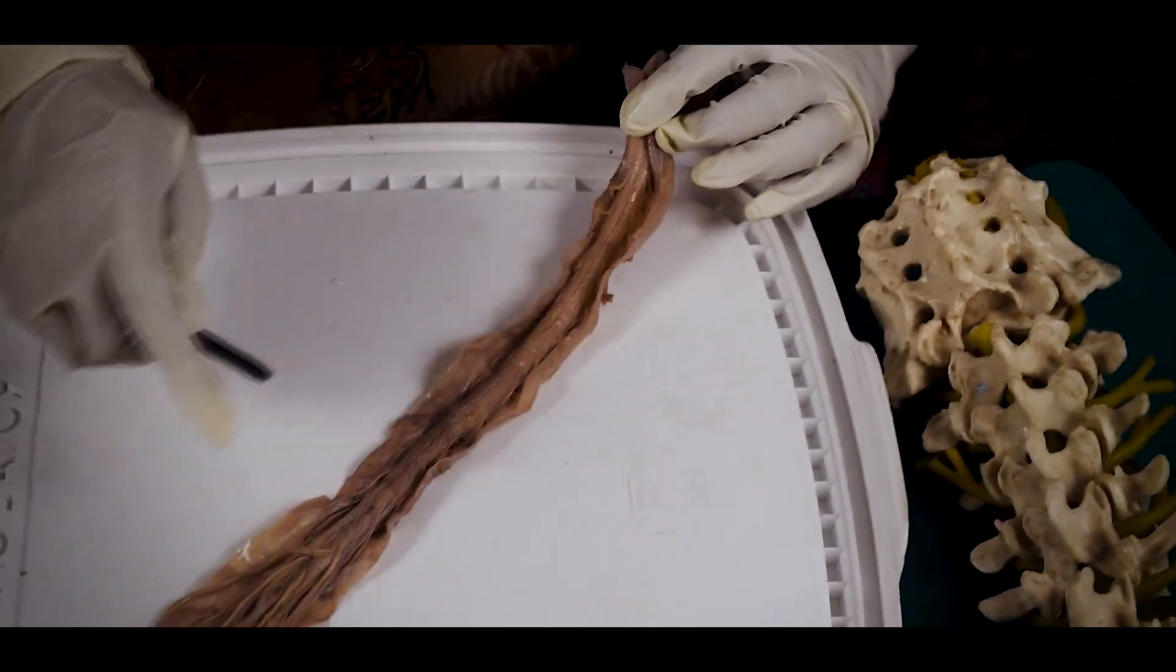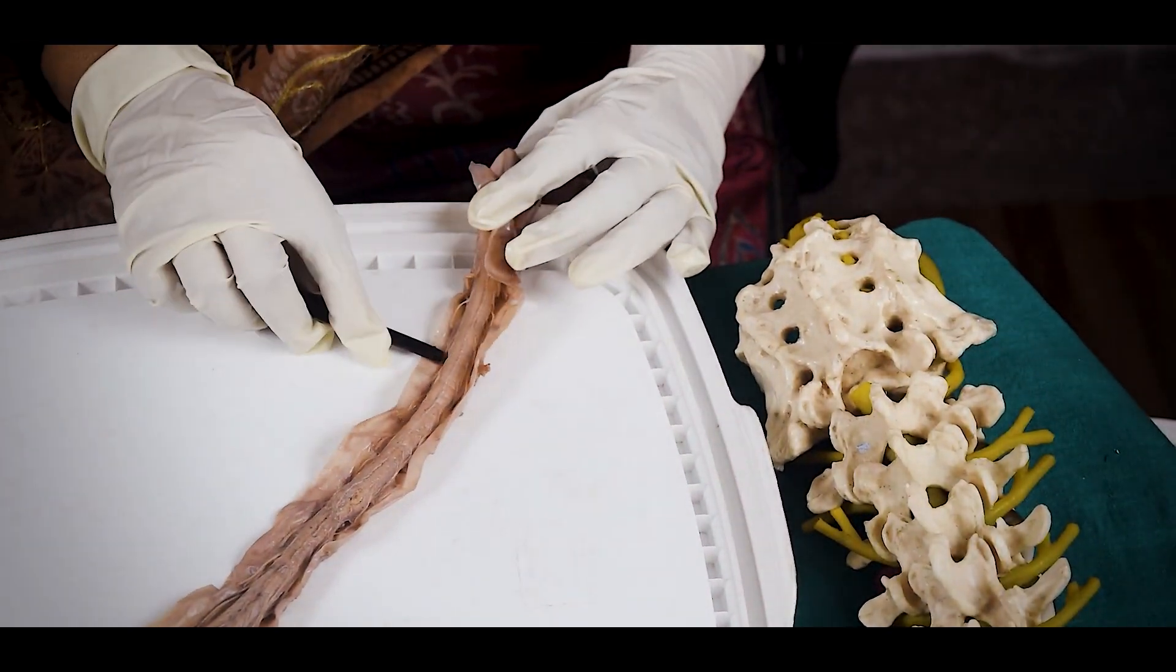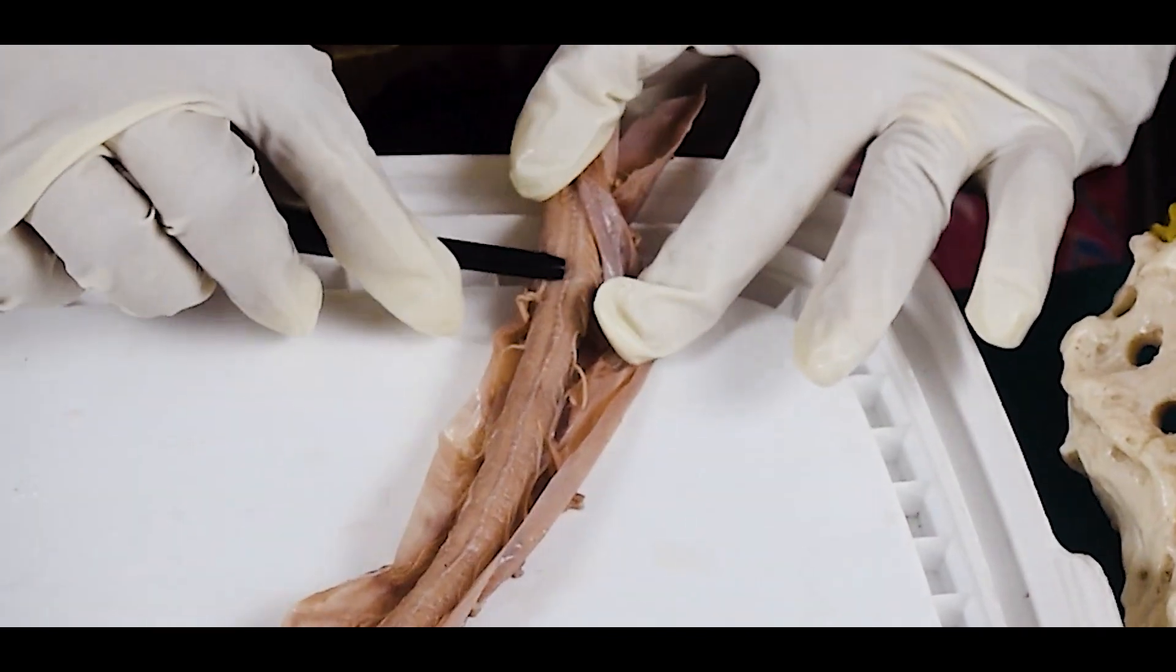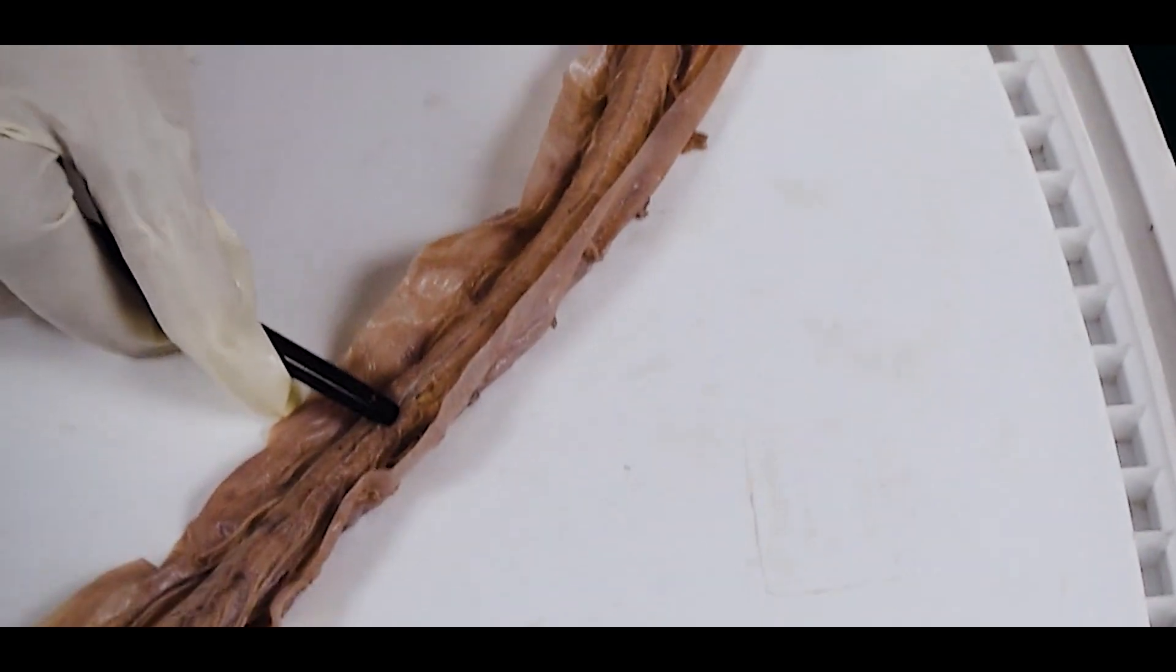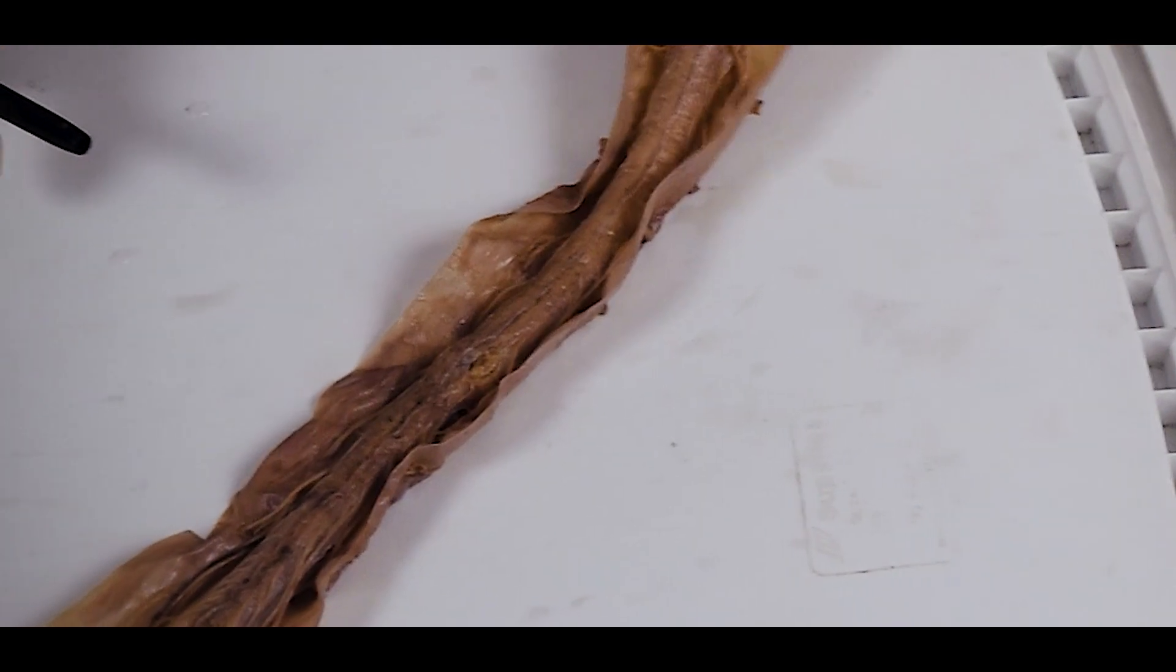And how will you identify the anterior surface and posterior surface? In the anterior surface there is a fine groove, you will see, and this is the anterior median sulcus.